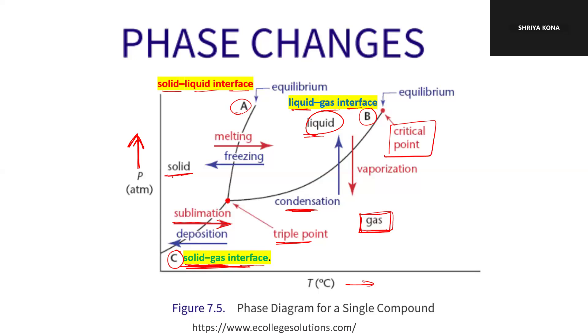Try to understand which phase is located where. Here it is solid, here it is liquid, here it is gas. Solid to liquid transition is melting; liquid to solid is freezing. Gas to liquid is condensation; liquid to gas is vaporization. And solid to gas and gas to solid are sublimation and deposition respectively. Now I'm going to take the example of two phase diagrams — one for carbon dioxide CO2, and the other for water.